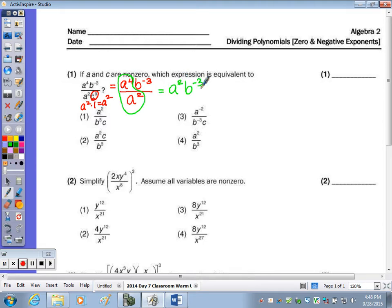We can't leave our answer with a negative exponent, so negative exponent rule says we make a fraction. b to the negative third becomes b to the third in the denominator with the a squared in the numerator, which is choice four.